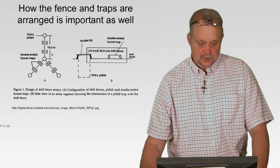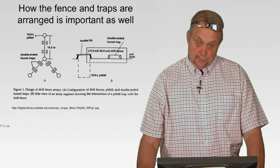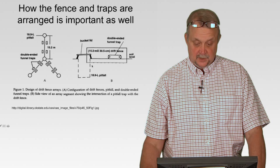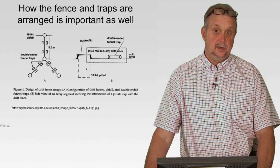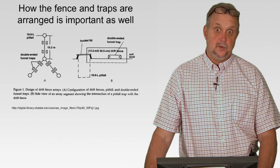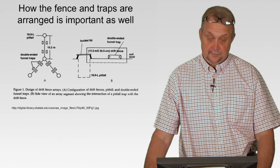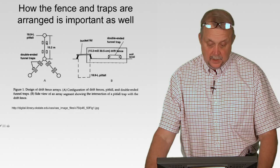This is the array I used, called a Y-array — you can see why from the shape. Here's your pitfall — not 18.9 liters but a five-gallon bucket here in the States — with a fence, and you can see the bucket lid with the bucket underground. This can be a lot of work. Where I worked was Four Peaks, which is quite rocky, and it took an extensive amount of time digging with picks to get a five-gallon bucket in the ground — but it was very successful.